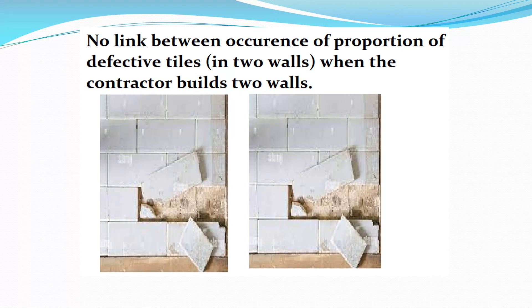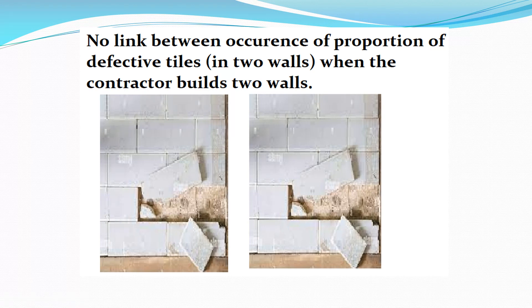It's a discrete probability distribution, so we will be counting the number of something. Let's say there is a contractor who is claiming that whenever he constructs a wall, the number of defective tiles is on average equal to 3. That's what the contractor is claiming. The first assumption of Poisson distribution is that the number of defective tiles is not linked from trial to trial. For example, if I give a contract of constructing two walls to this contractor, then according to the assumption of Poisson distribution, the number of defective tiles in wall number 1 and wall number 2 are not related.